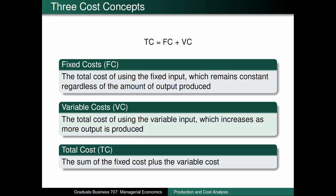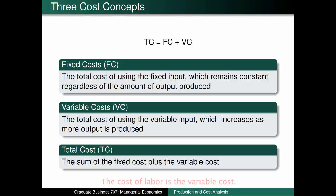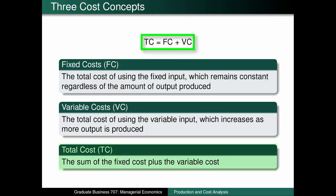In general, variable costs are costs that change depending on the amount of production, whereas fixed costs are costs that are the same regardless of how much a company produces. Recall from the recording on short-run production that the number of workers is variable in the short-run, whereas the number of machines is fixed. Therefore, the cost associated with capital is referred to as the fixed cost, and the cost associated with labor is referred to as the variable cost. Adding up fixed cost and variable cost results in the firm's total cost in the short-run.